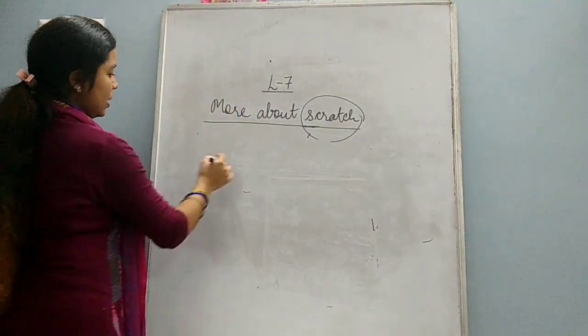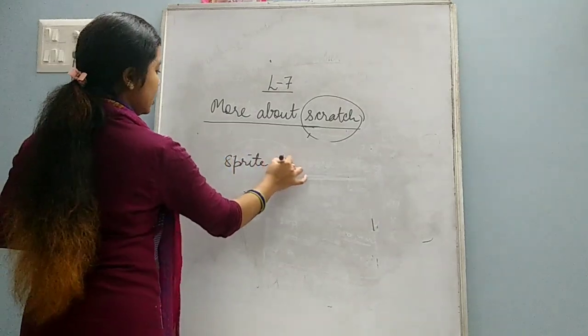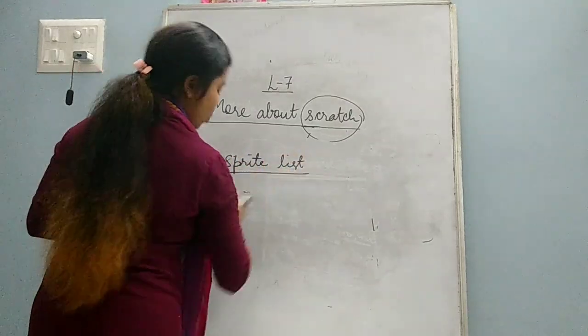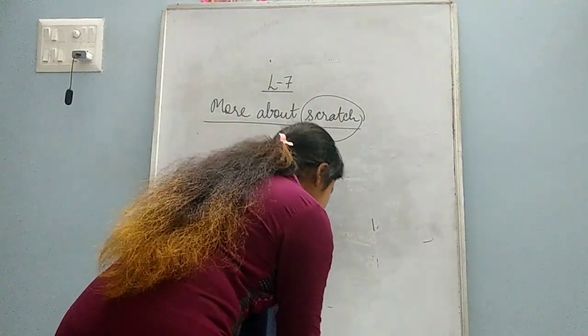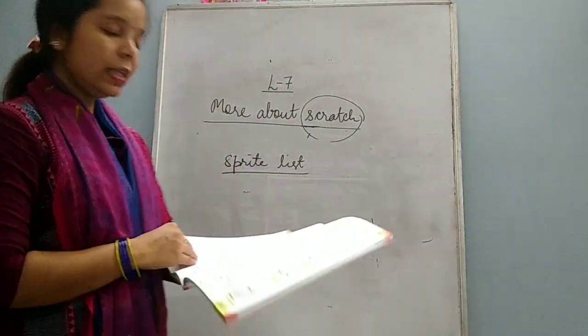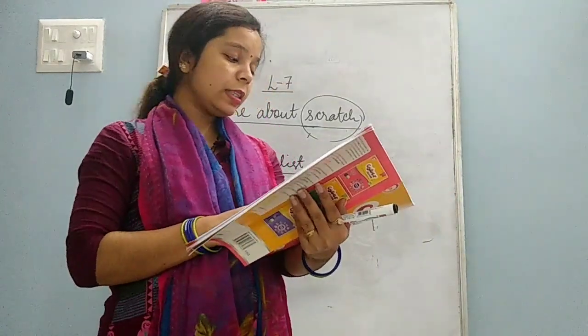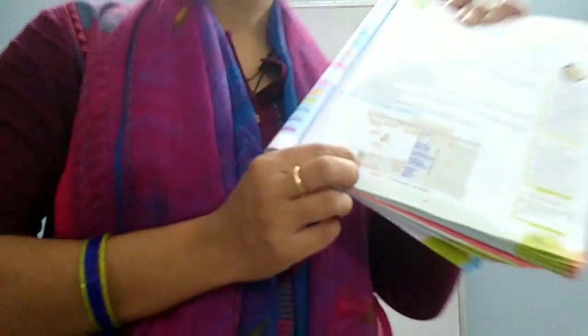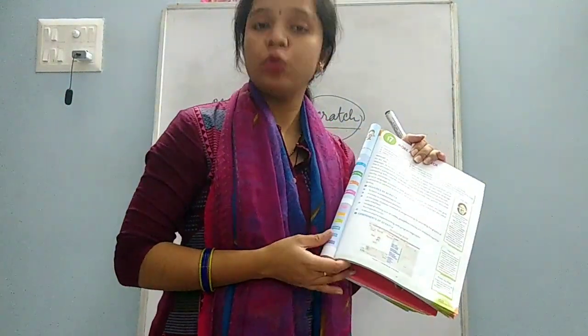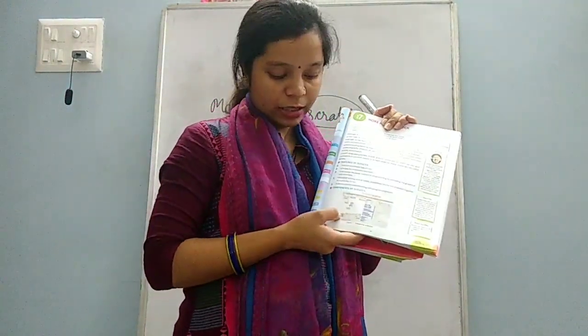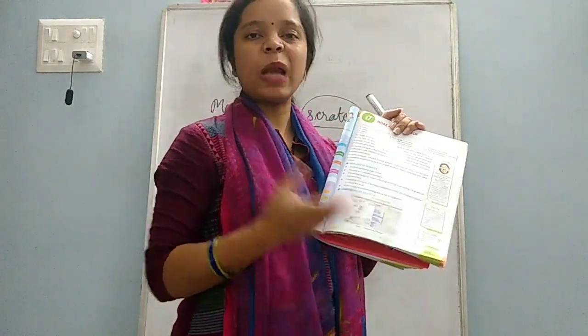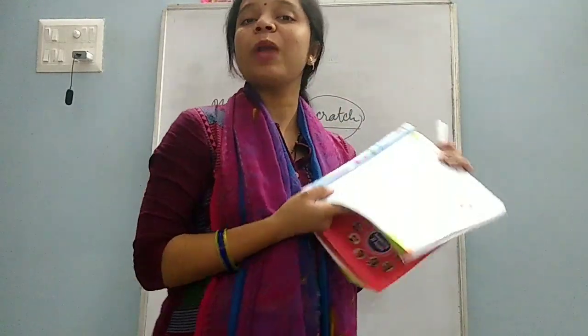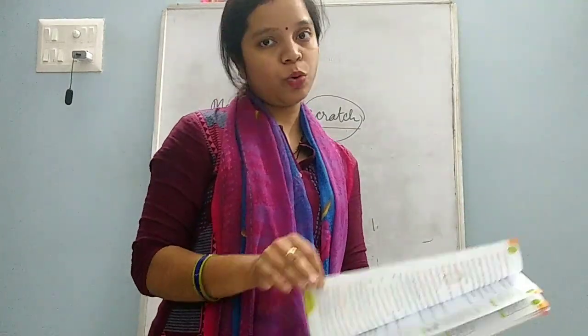Next one given is sprite list. What is this sprite list? It is located below the stage and displays the thumbnails of all sprites that we have selected. You can see this sprite list in your book - it is below the stage and it tells which sprites we have used in our project. Sprite list simply gives a list of the sprites that we have used in our project.